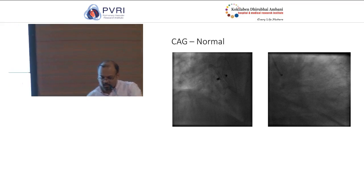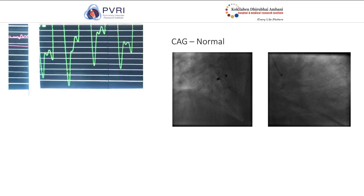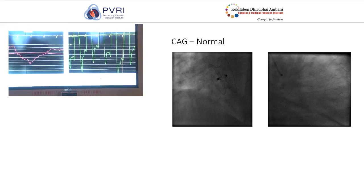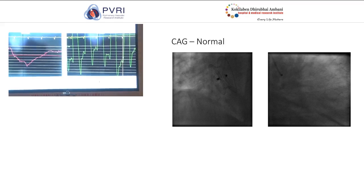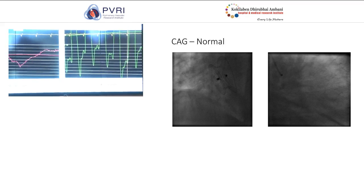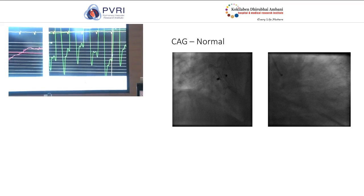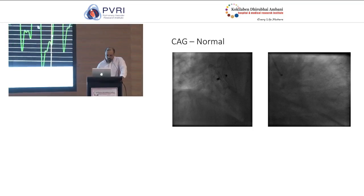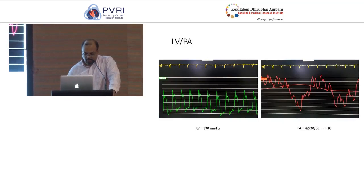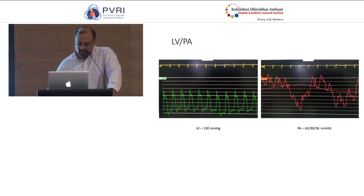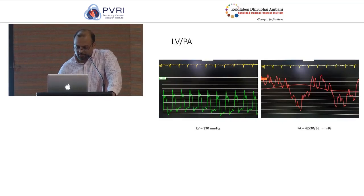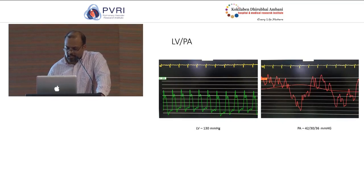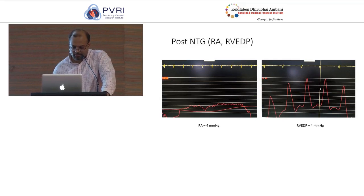We decided to give IV furosemide — a 40 mg bolus — and after 10 minutes took the pressures. Pulmonary capillary wedge pressure had come down to around 26, and LV end-diastolic pressure also came down to around 26 mmHg. His LV, equaling aortic pressure, was 130 mmHg, and pulmonary artery had come down to 42/30, mean of 36, indicating mild pulmonary hypertension.